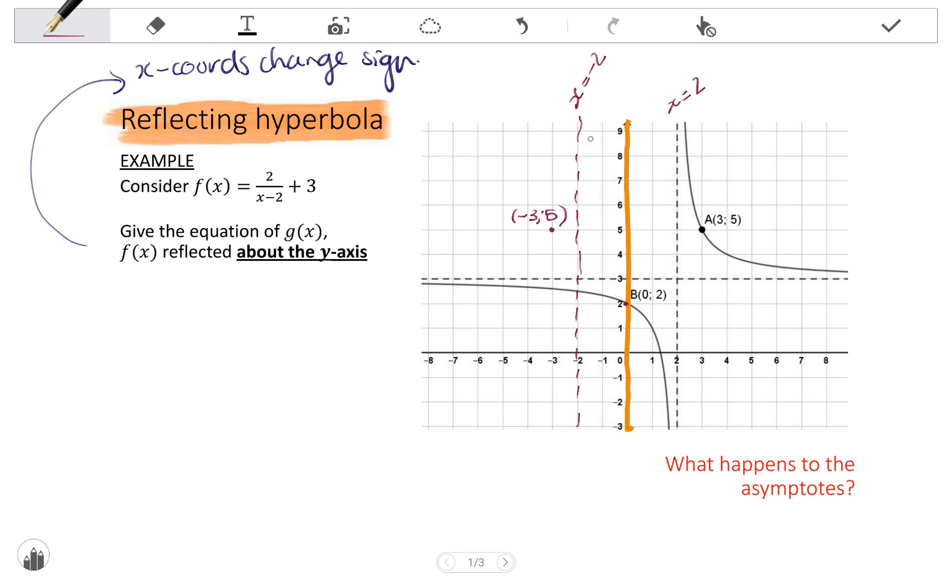But the horizontal asymptote, because it has a y-value and y does not change anything, the horizontal asymptotes don't change. Drawing the graph of the reflection, one arm sits there, and the other is about there. So notice the mirror image about the y-axis.